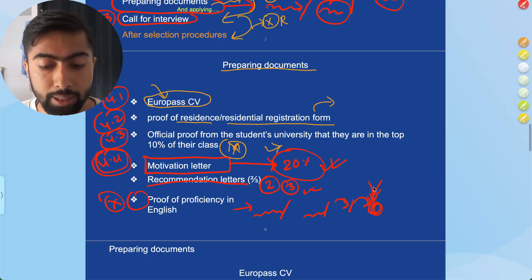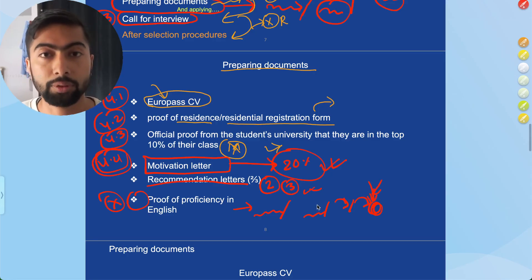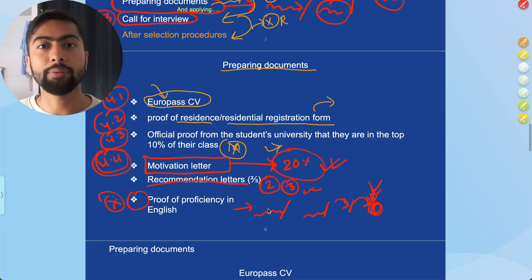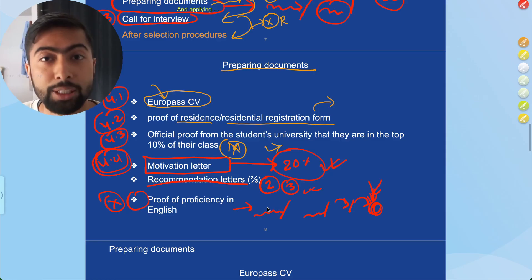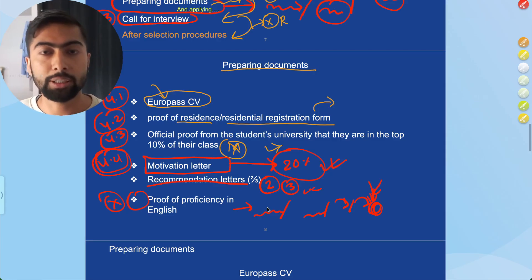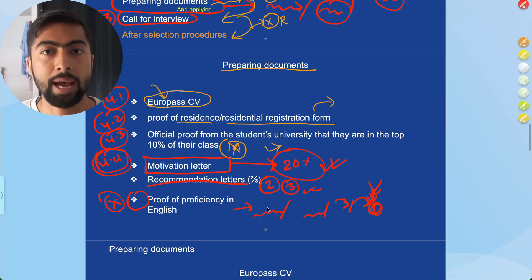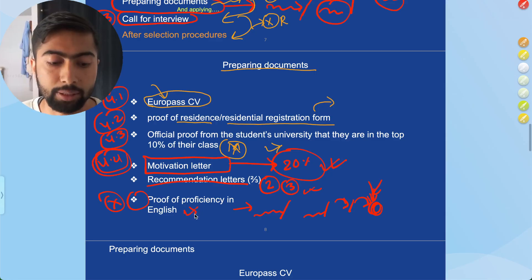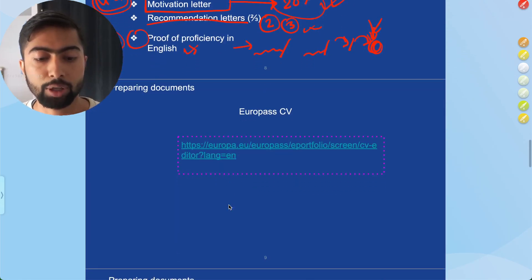To not limit the number of programs you can apply for, I suggest taking IELTS or another English proficiency test first, so you have unlimited potential to apply for any program. You don't want to be restricted by a program's criteria requiring an IELTS result before the call for interview. This is something I strongly recommend. For preparing documents we will cover each in separate videos.